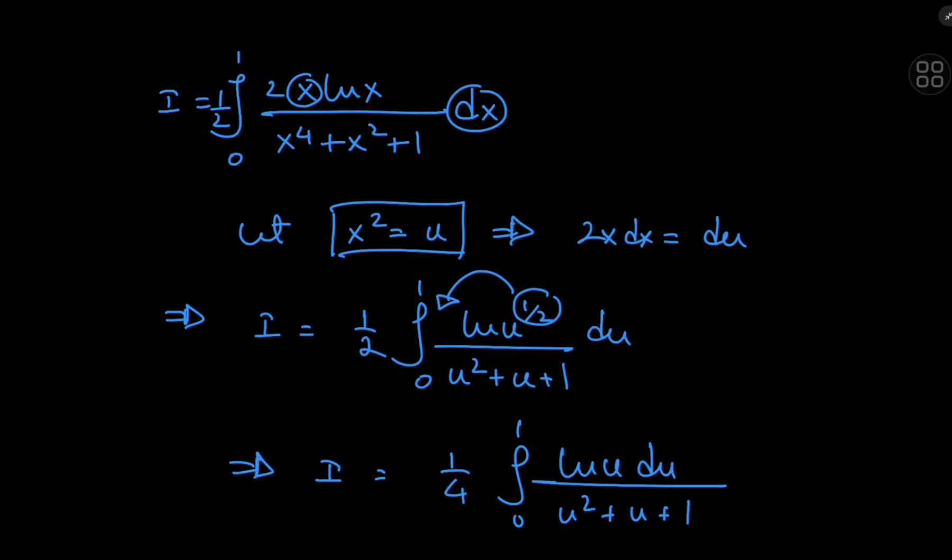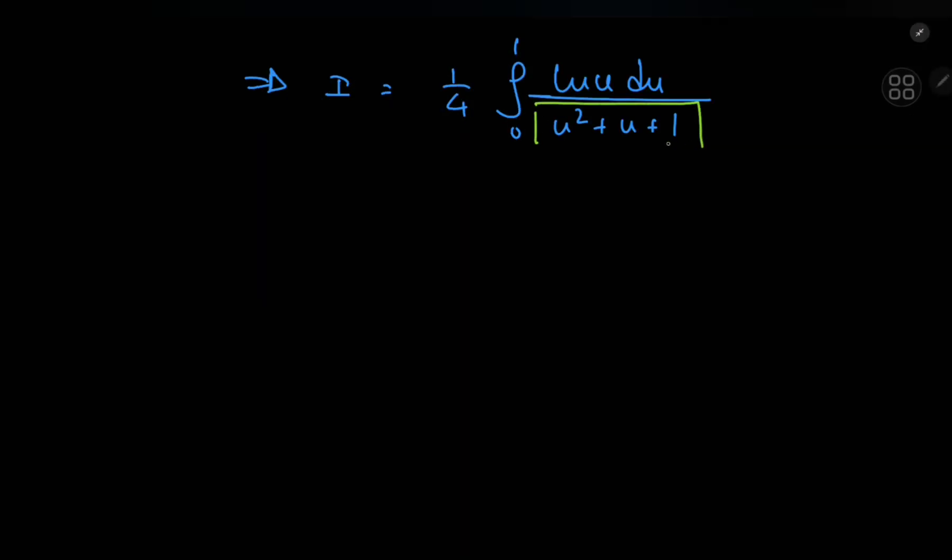Which does look like an interesting structure, but how exactly do we tackle the problem from here? Well, it's the denominator that provides some motivation. u squared plus u plus 1 is one of the factors of a very nice, very cute binomial.